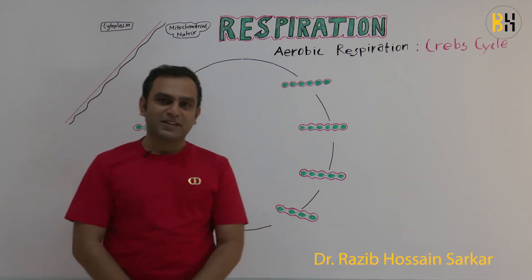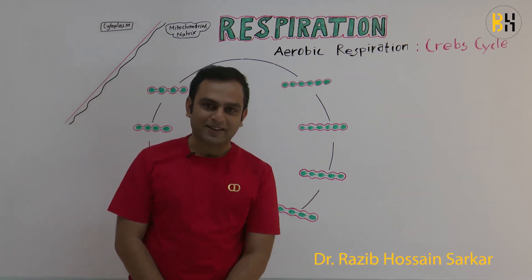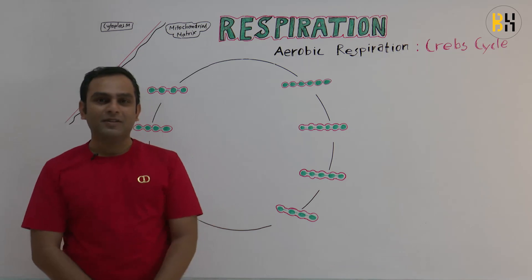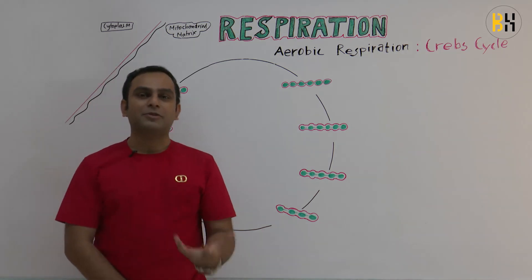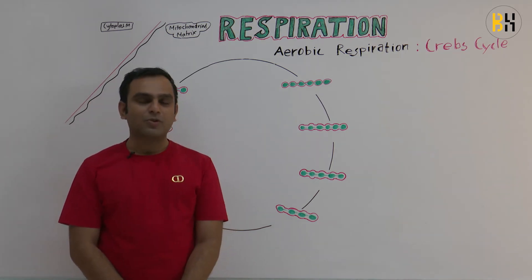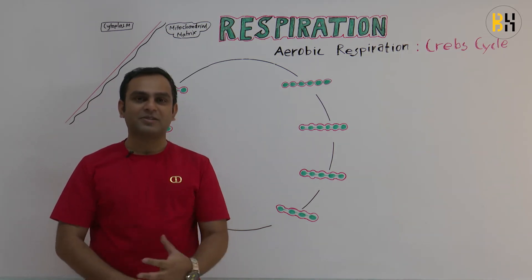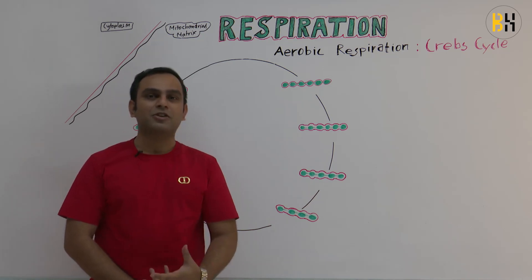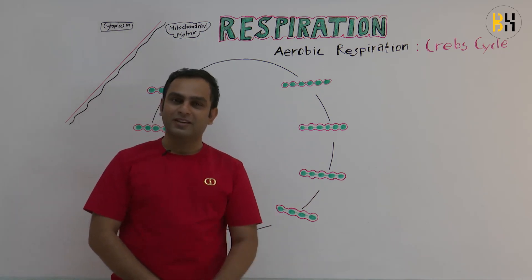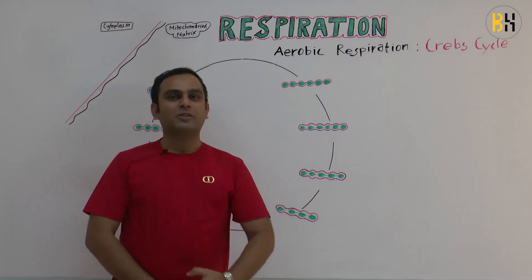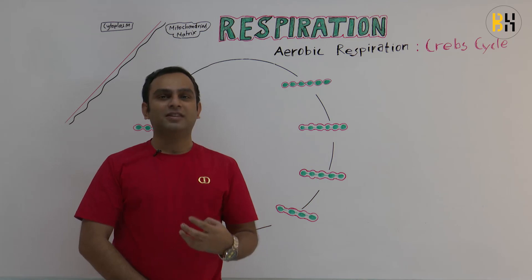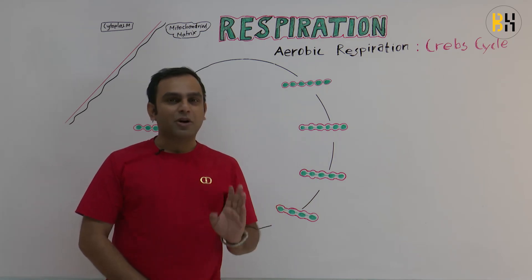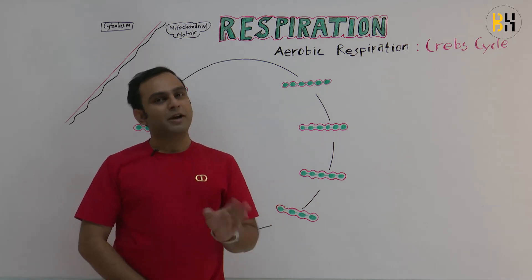Assalamualaikum. Shabat Shosun has two important parts. Abat Shosun is the cytoplasm and Shabat Shosun is the mitochondria.